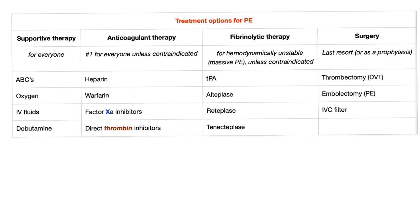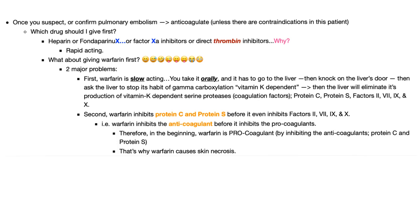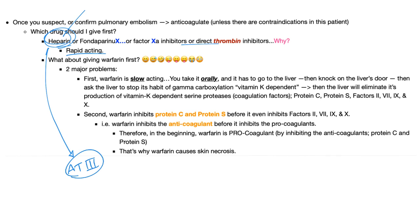The treatment of PE: supportive, anticoagulant, fibrinolytic, and surgery. Once you suspect or confirm pulmonary embolism, you anticoagulate right away. Don't wait for fancy labs — just go ahead and save the patient's life. Give heparin first because it's rapid acting. Heparin stimulates antithrombin-3, which is the actual hero. Heparin just takes all the credit.